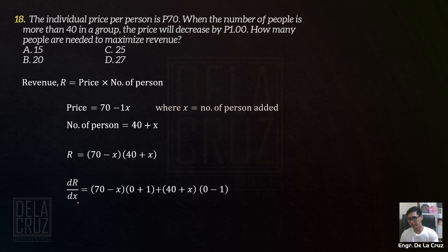Then again, set the slope equal to 0 — concept of maxima-minima. This is not a quadratic equation; walang nakasquare na variable. So X is equal to 15. Additional.